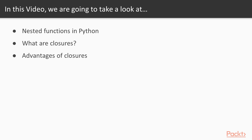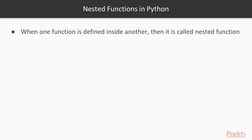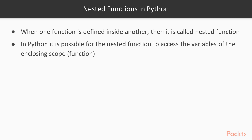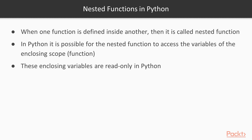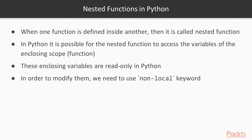When one function is defined inside another it is called a nested function. So suppose you have one outer function and you define another function inside it — that inner function is called a nested function. In Python the nested function can access variables of the enclosing scope, meaning the inner function can access variables defined in the outer function. However, these enclosing variables have read-only access for nested functions. To modify them we can use the non-local keyword, which is only available in Python 3.